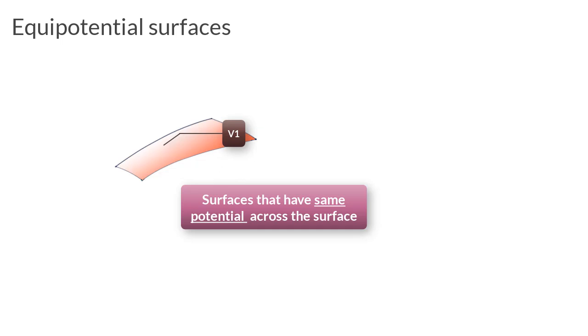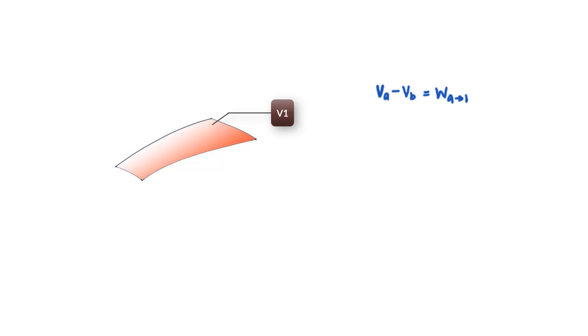These can be imaginary surfaces or sometimes real physical surfaces too. And if you go by the equation that connects work done on a charge and the change in potential, what we will see is that if you take two points on an equipotential surface and move a unit charge from point A to B, no work is done since potential at A is equal to potential at B making this expression 0 and therefore the work done also becomes 0.